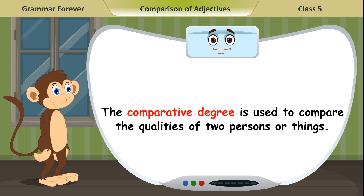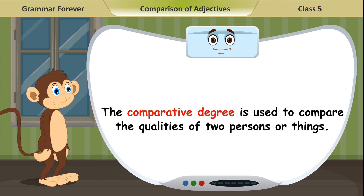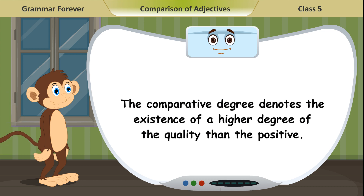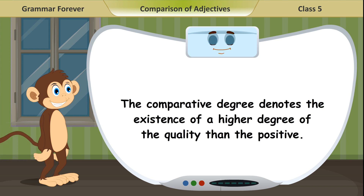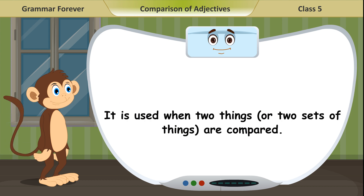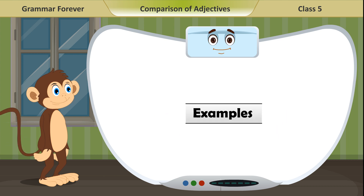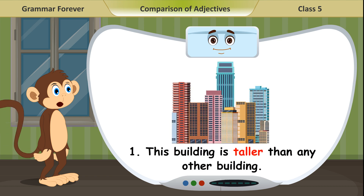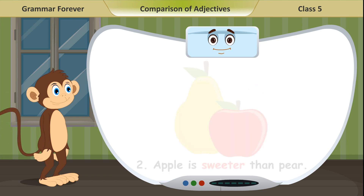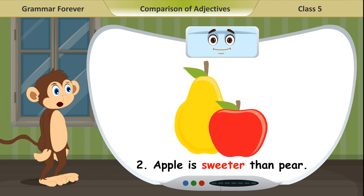The comparative degree is used to compare the qualities of two persons or things. It denotes the existence of a higher degree of the quality than the positive. It is used when two things or two sets of things are compared. Examples: 1. This building is taller than any other building. 2. Apple is sweeter than pear.